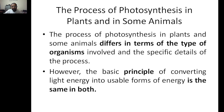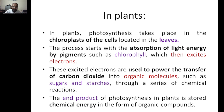The process of photosynthesis in plants and other organisms differs in terms of the type of organism involved and specific details, but the principle of converting light energy into a usable form of energy is the same. In plants, chloroplasts absorb light via chlorophyll pigments in the leaves. Excited electrons are used to convert carbon dioxide into organic molecules. The electrons from the light-dependent cycle are utilized in the light-independent cycle to generate organic molecules like sugars and starch.